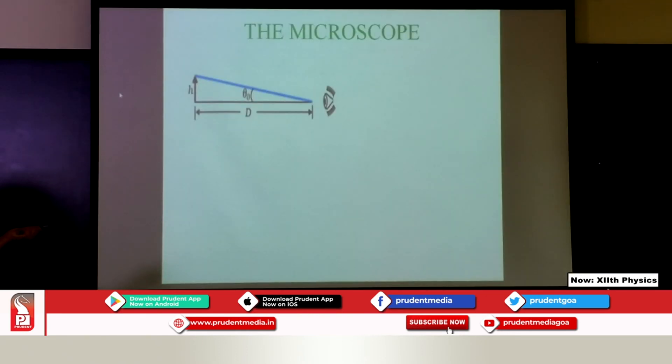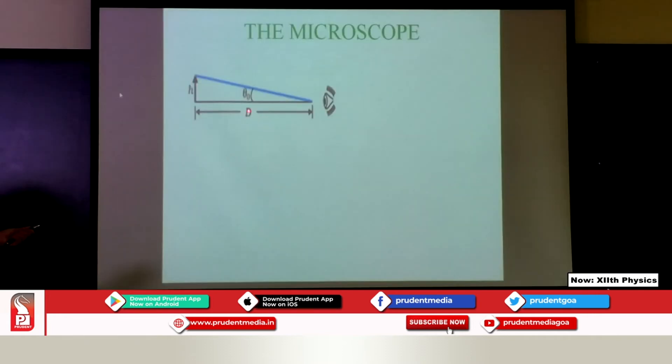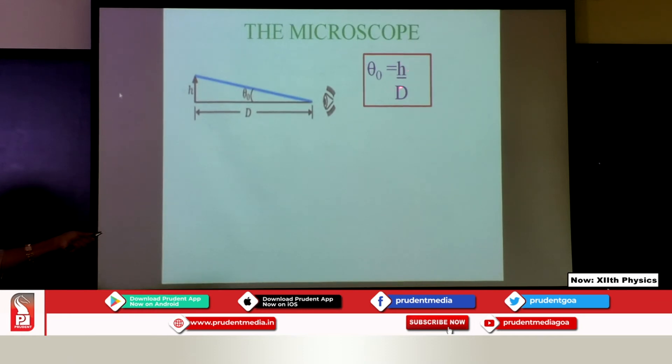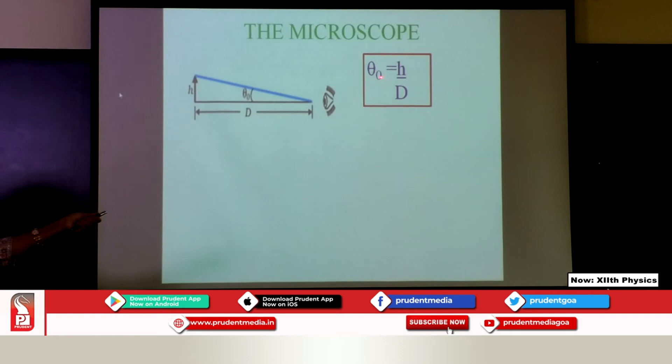If I keep the object farther than D, the angle decreases; I cannot keep it closer than D because the image will be blurred. So the object is kept at distance D with height H. Theta at the object is H by D — taking tan of theta — so theta at the object equals H upon D.